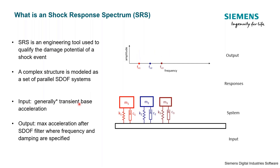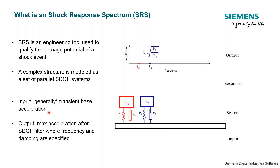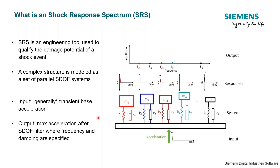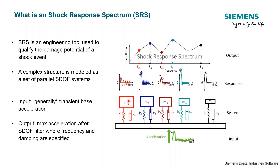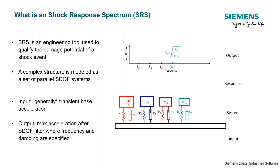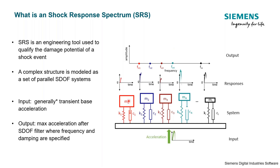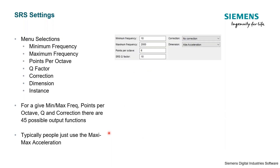It's a transient base acceleration. It's used when we develop electrodynamic shaker profiles in a process called mission synthesis to evaluate whether we've over-accelerated the time. The output is max acceleration after the SDOF filter where frequency and damping are specified. We'll have absolute acceleration, relative velocity, relative displacement, and others. The SRS is basically a model of a base input — we always put in acceleration as the input.